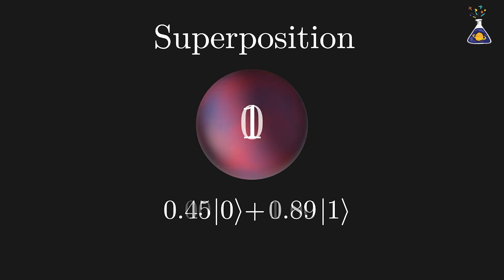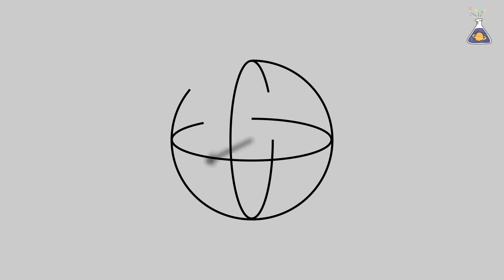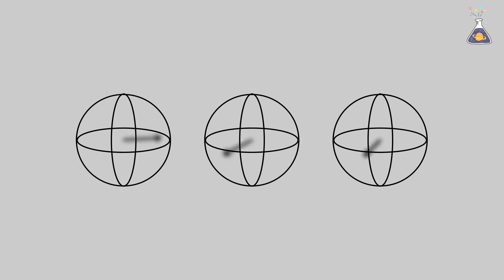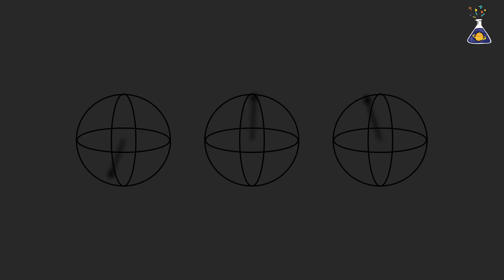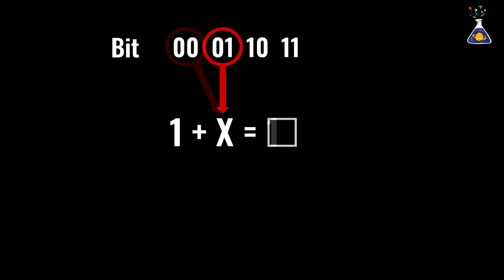And it doesn't end there. When qubits are linked together, something even more extraordinary happens. Quantum computers don't just compute using a single qubit. They can perform every possible calculation simultaneously. Here's what that means. Imagine the equation 1 plus x equals what? A conventional computer using two bits must select one of four possibilities, 00, 01, 10, or 11, to compute at a time. Inputting 00 yields 1, 01 yields 2, and so on. Each scenario is calculated one by one.